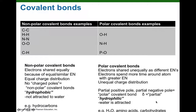One mistake I noticed I was making was I was talking about atomic pairs when, in fact, I should have been using 'atom partner' in describing covalent bonds. So if we have two atom partners involved in a covalent bond, and both of the atom partners have the same or almost the same electronegativity, we're going to form a nonpolar covalent bond.